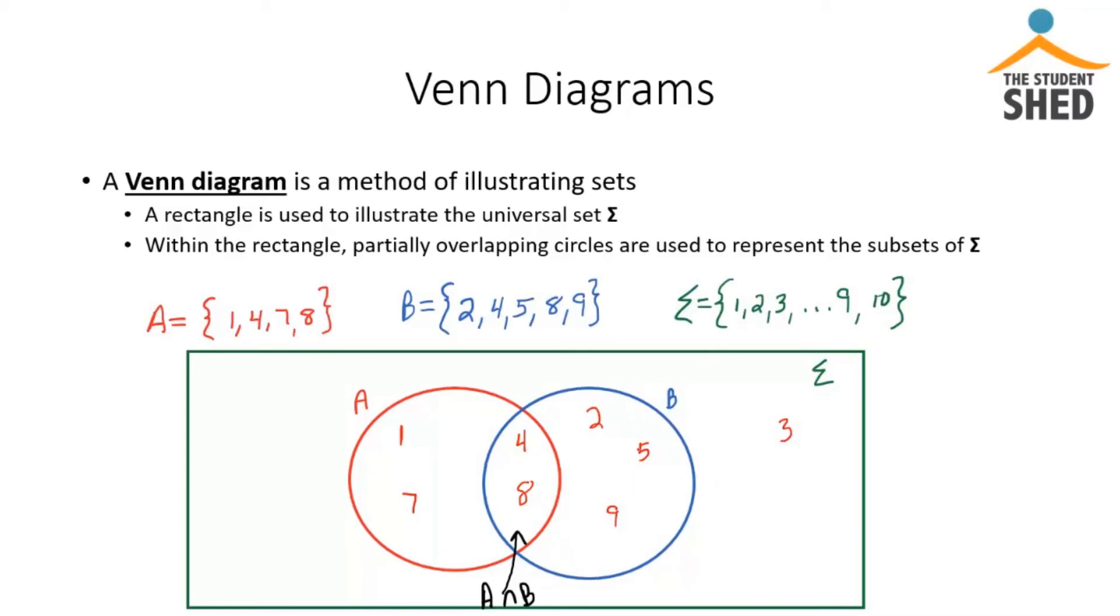4 is represented, 5 is. 6 is an element of the universal set but not an element of A or B. So that's going to be outside the circles.